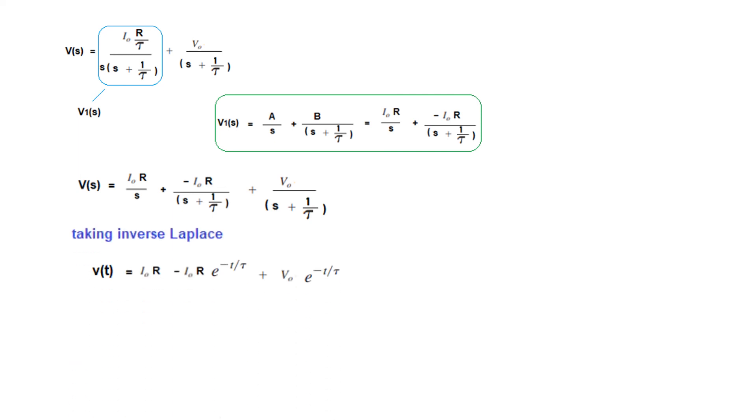Taking inverse Laplace, this becomes I0R u(t), but there is no need to write u(t) if we state it is for t greater than 0. The second term gives minus I0R e^(-t/tau), and similarly we get V0 e^(-t/tau). This is our answer. Rearranging, we get the answer as given in the book.